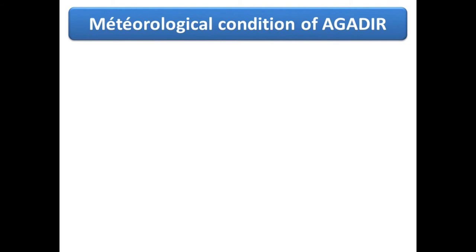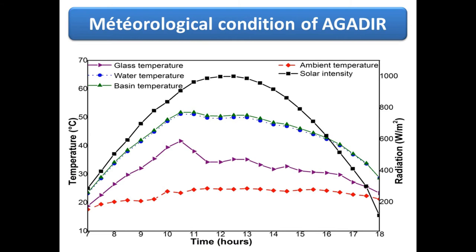We integrated the weather conditions of the Agadir region for a typical day and found the following results. The curves in the figures show the temperature evolution of each component of the distiller. We can observe that the basin temperature is the highest, which seems logical since the basin is made of a material of high thermal conductivity. The water temperature rises gradually but remains lower than the temperature of the basin.